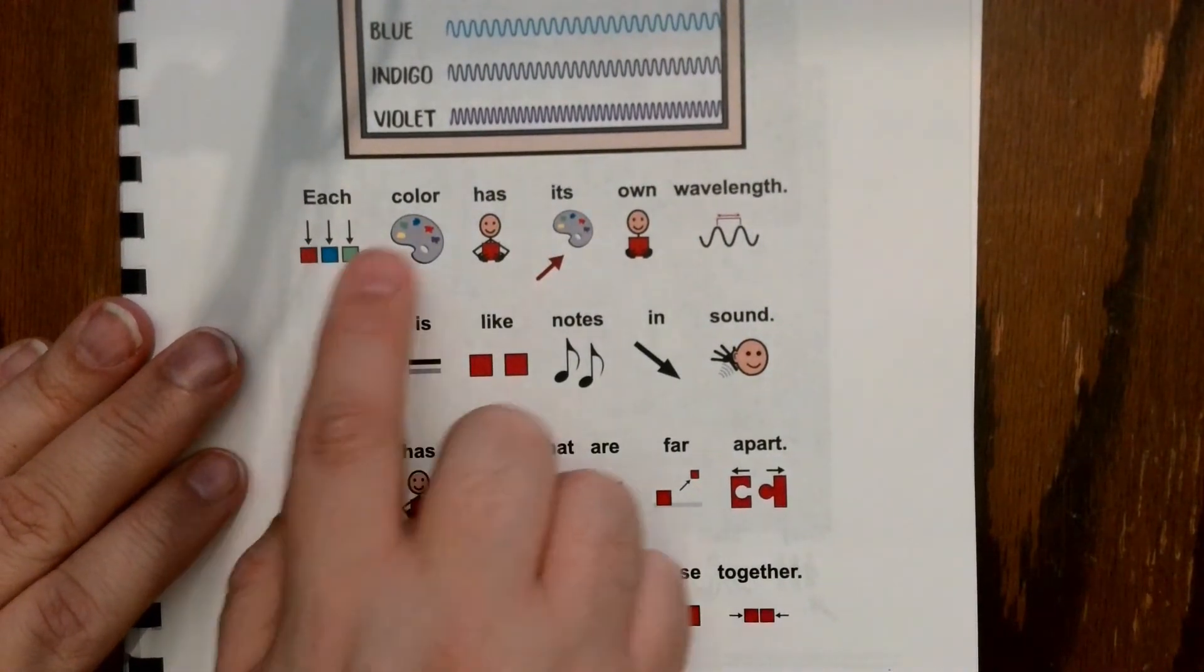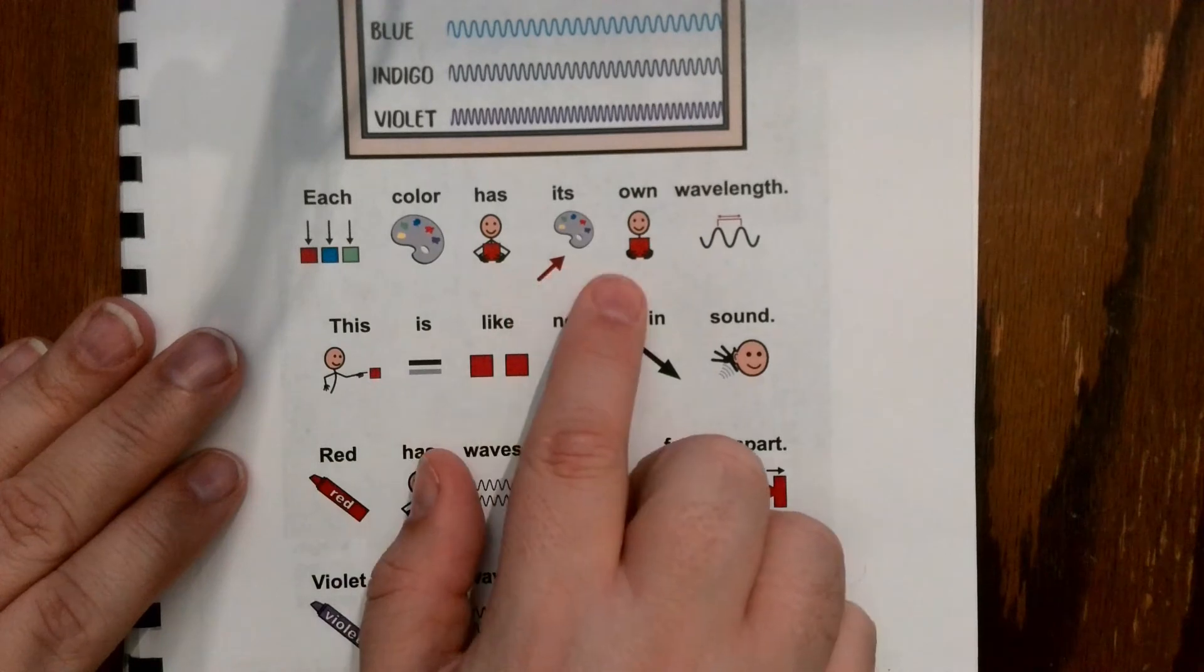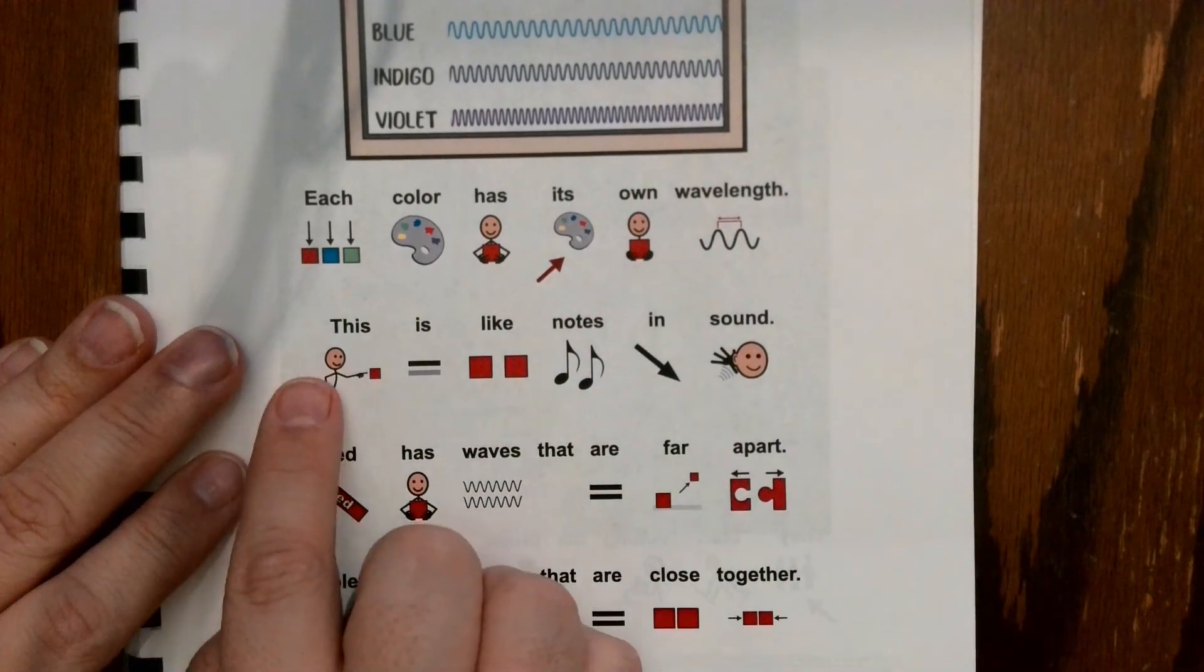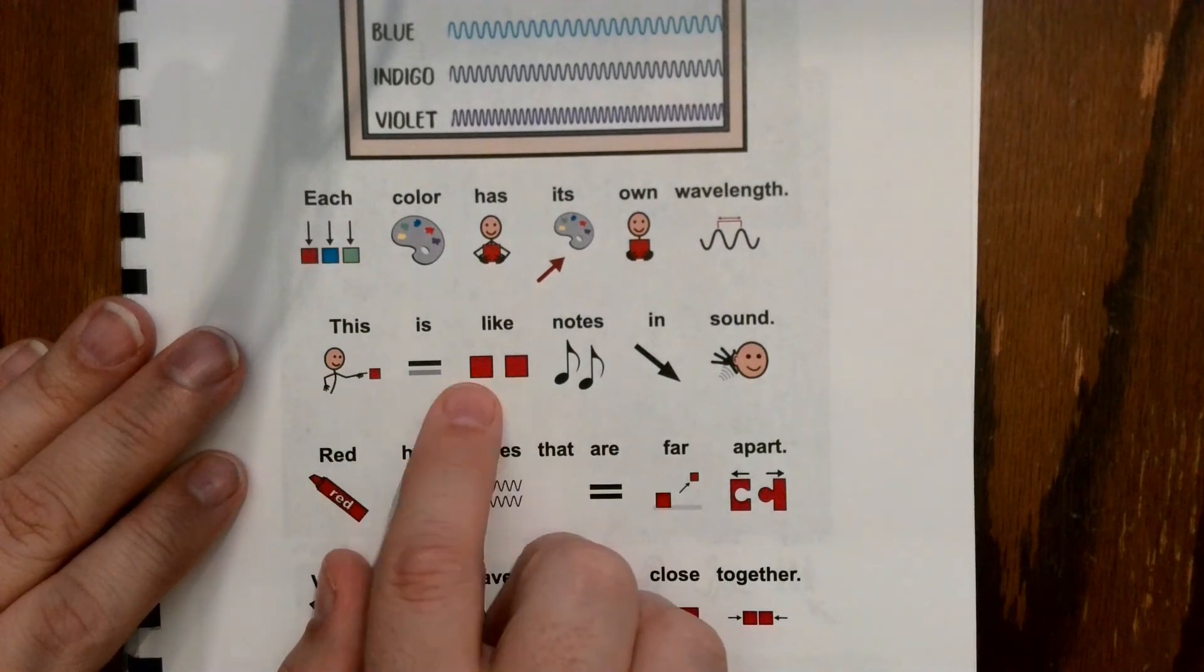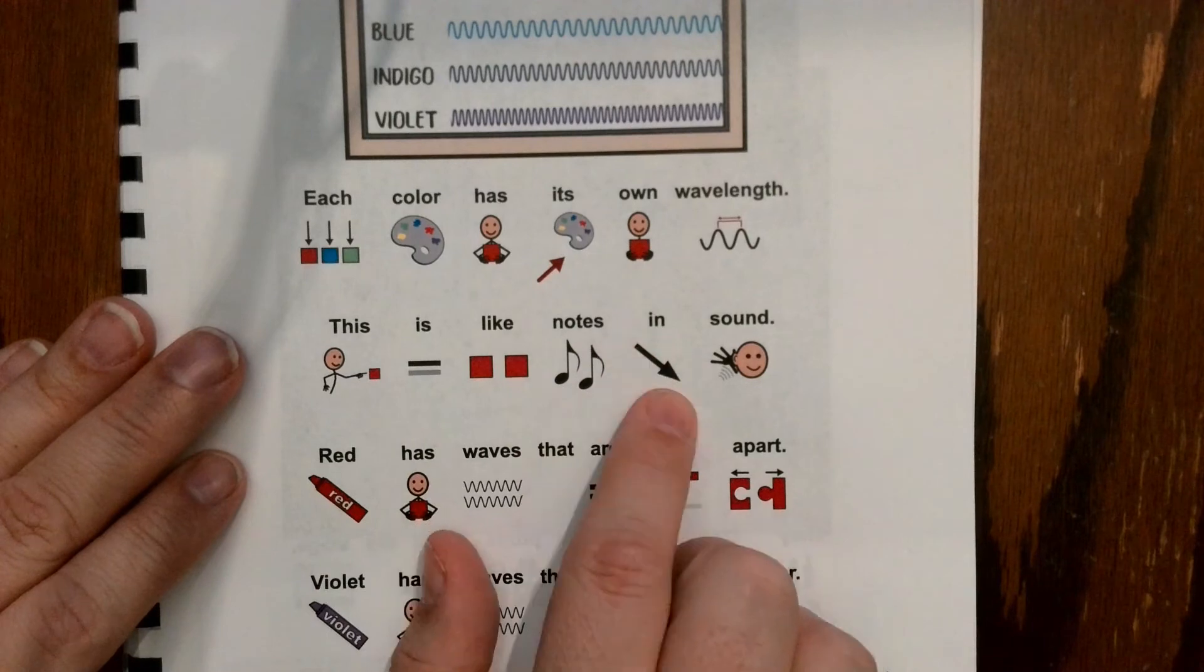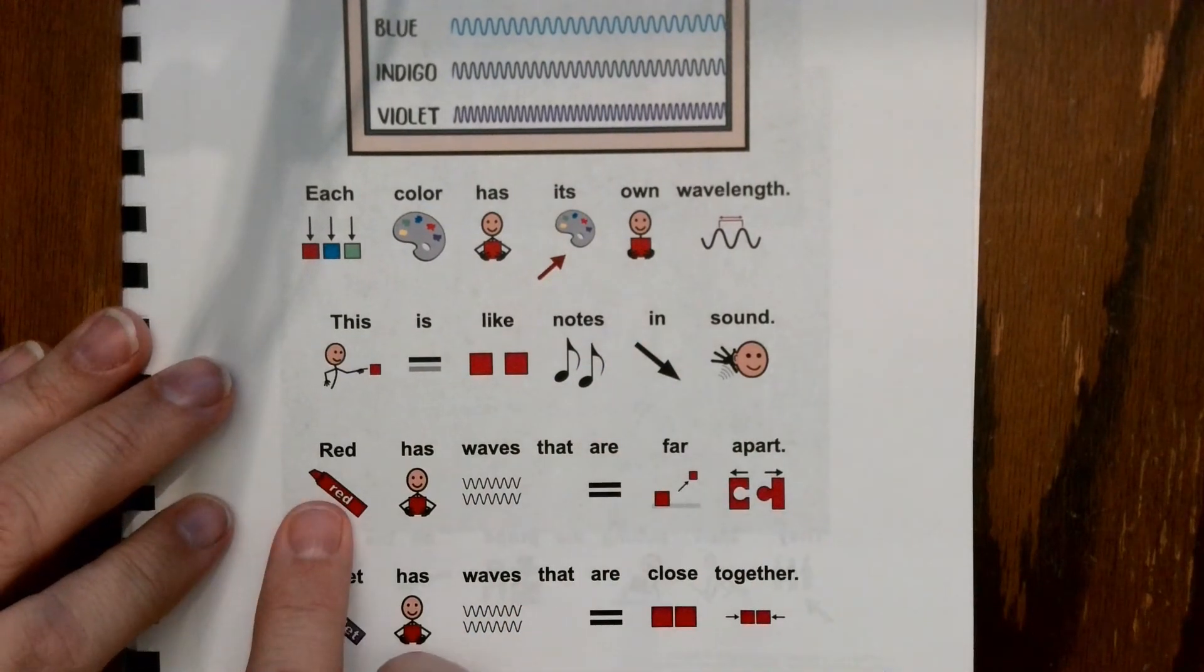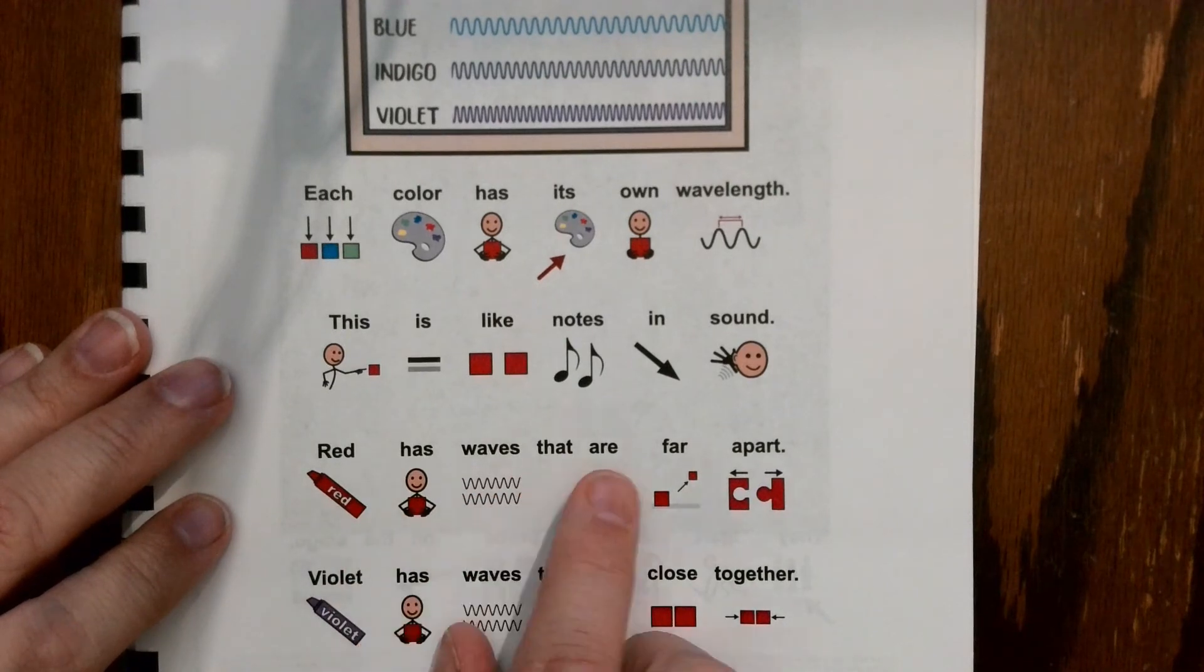Each color has its own wavelength. This is like notes in sound. Red has waves that, light waves that are far apart.